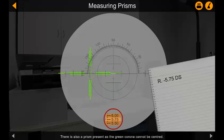There is also a prism present as the green corona cannot be centered. The prism is measured by the amount of displacement it causes. Each marking on the reticule represents one prism diopter. In this case, the prism for the right eye lens is displaced by three prism diopters.